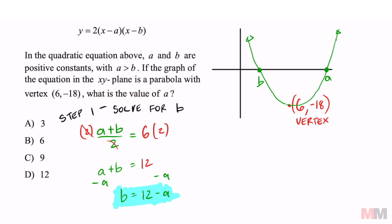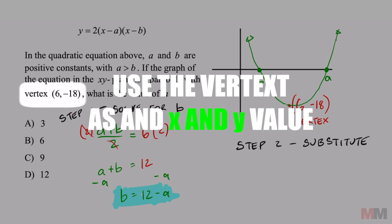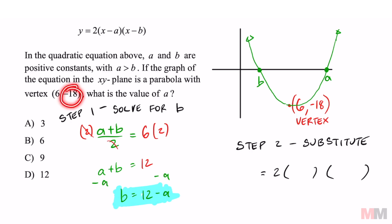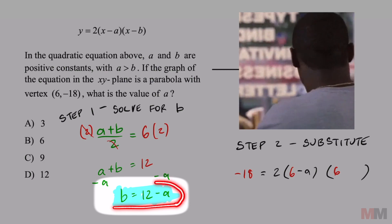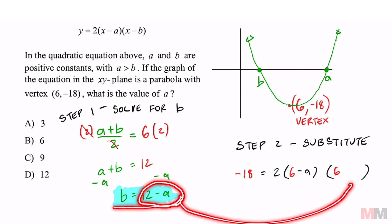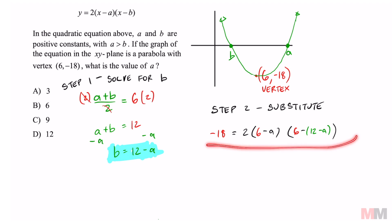Now we're going to use that information in step two, where we're going to substitute a bunch of stuff. We're going to replace every variable that we know, and we are going to use our vertex as our x and y value. Y is going to be -18. In the equation, we got two x values, which we're going to use a 6 for. We do not have an a value, so we're going to keep that as a minus a. We do have a b value, which we can substitute 12 - a for it. And this is going to work because now we have an equation to solve for a, which is our main goal.